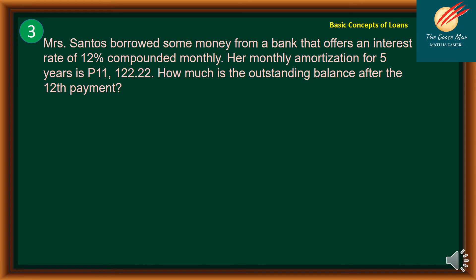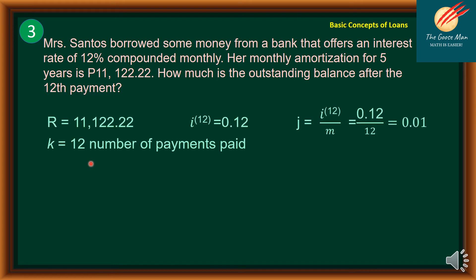Example 3: Mrs. Santos borrowed money from a bank offering 12% interest compounded monthly. Her monthly amortization for 5 years is 11,122.22 pesos. How much is her outstanding balance after the 12th payment? The regular payment R = 11,122.22, annual interest rate = 12%, and the interest rate per period j = 12% ÷ 12 = 1% or 0.01.